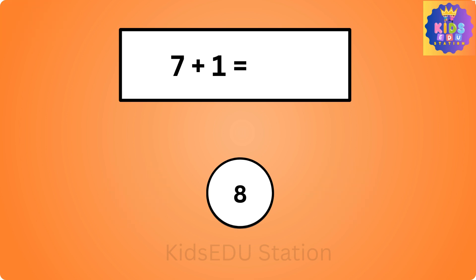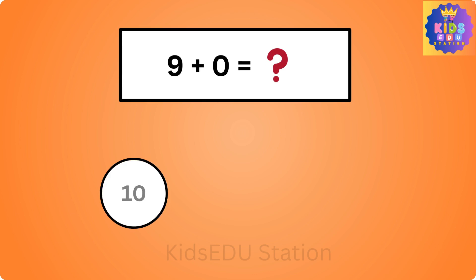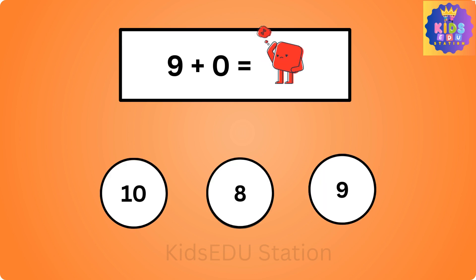7 plus 1 is 8. What is 9 plus 0? 10, 8, 9. 9 plus 0 is 9.